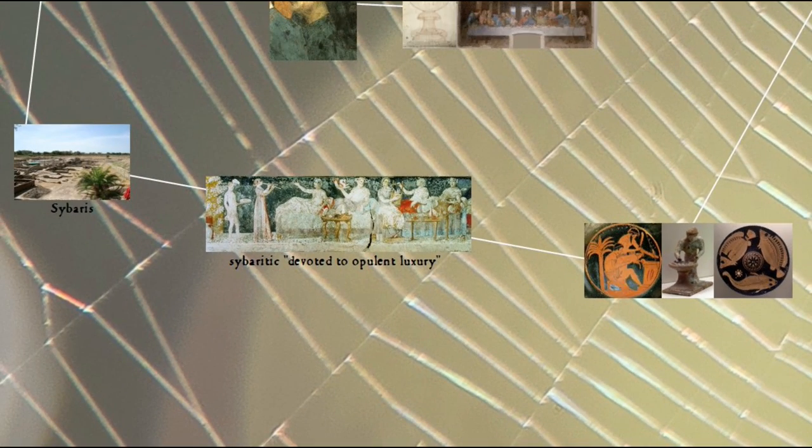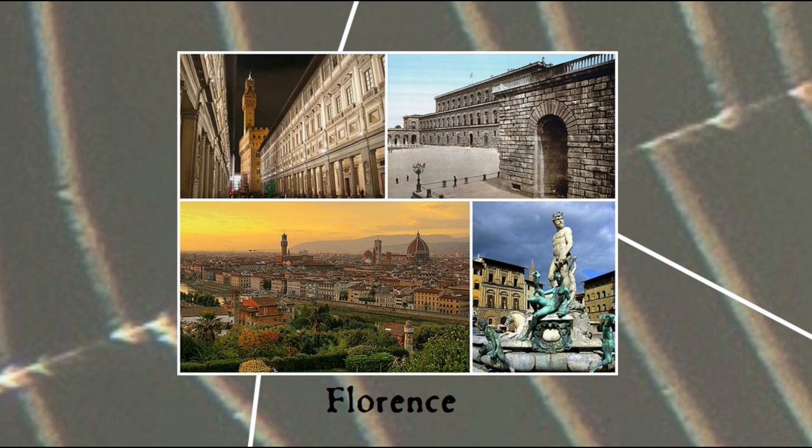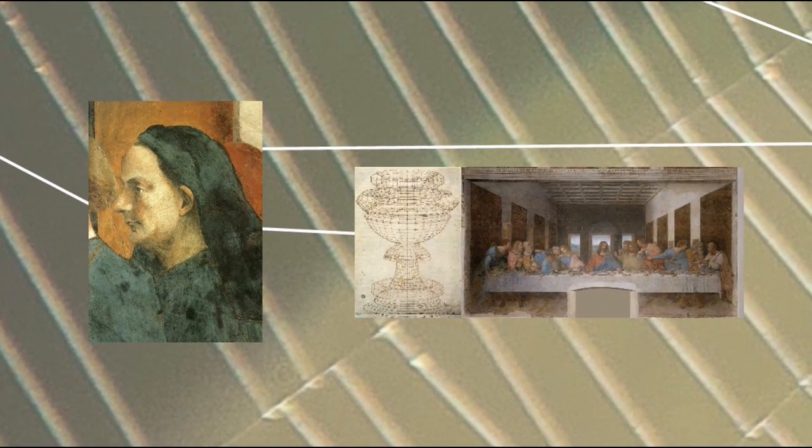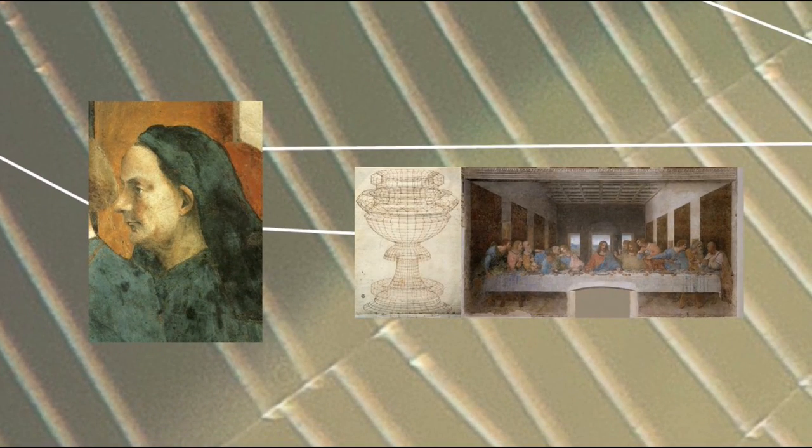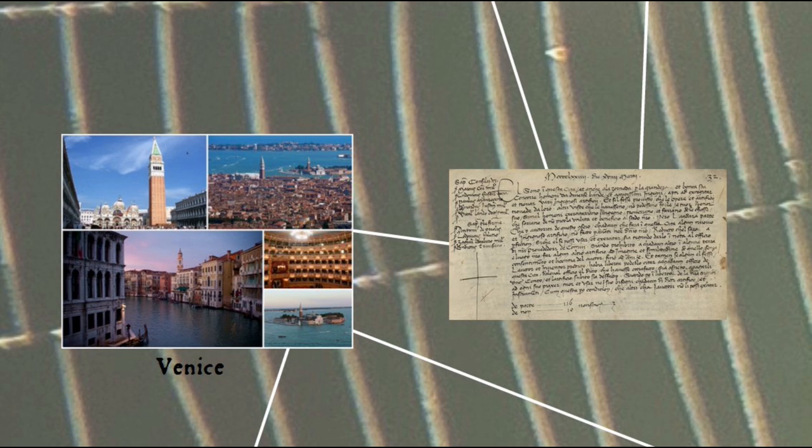The first patent in the modern sense was granted in another city in Italy that became extremely wealthy and known for its opulence in the Renaissance, Florence. In 1421 the Florentine architect Filippo Brunelleschi, who is best known for developing linear perspective and thus transforming Renaissance art, was granted a three-year monopoly for a barge with hoisting gear for transporting marble. By 1450 the practice had become systematized in Venice, another economic powerhouse Italian city, with ten-year patents, and afterward gradually spread throughout Europe.